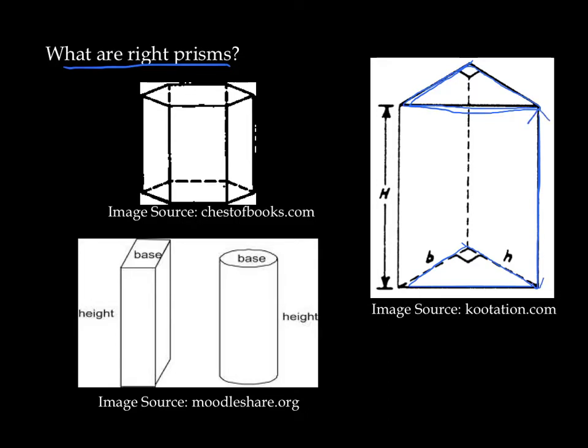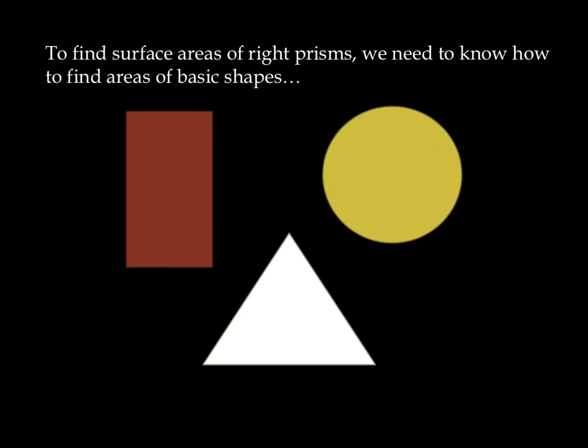So a right prism stands straight up. And an object like a triangle is projected through three dimensions through a height h. Alternatively, we could have a base like on the bottom here, a circle, or a base that's a rectangle or whatever we want for a right prism.